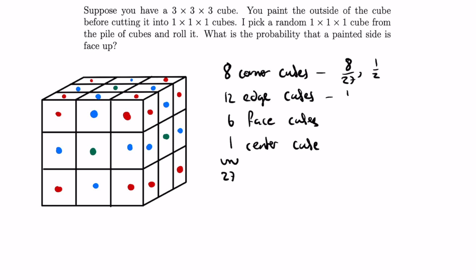The probability of picking up an edge piece is 12 over 27, and the probability of rolling a painted side is 1 third, since there are 2 painted sides from the total of 6 sides of the cube.